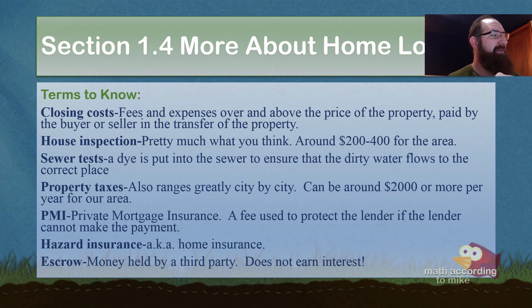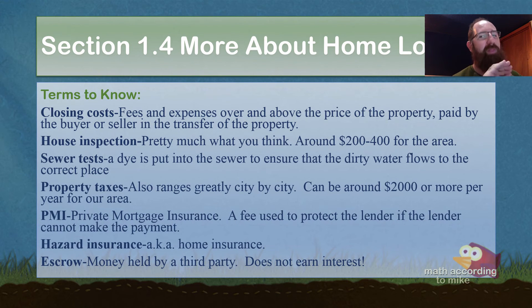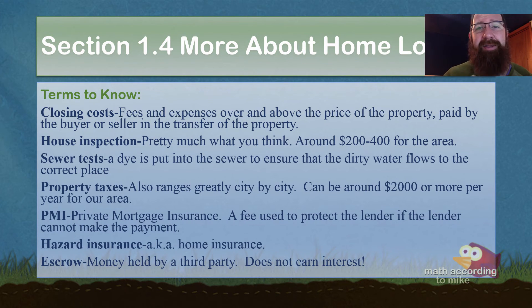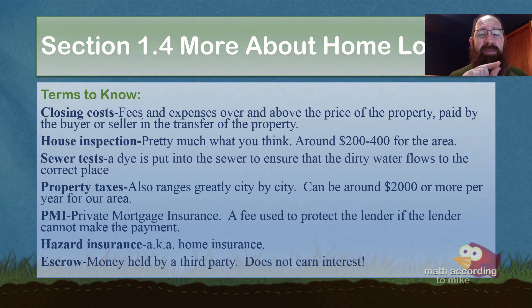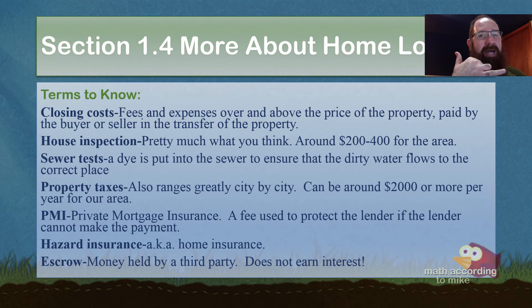This private mortgage insurance is a fee you pay to a bank that you've already proven to them you can afford the house — but it's just there in case you can't. You pay this PMI until you've hit your 20%. The cynical part is you have to keep track of when you've hit your 20% yourself, and you have to call your bank to say 'I've hit my 20%, stop charging me PMI' — because they won't tell you.